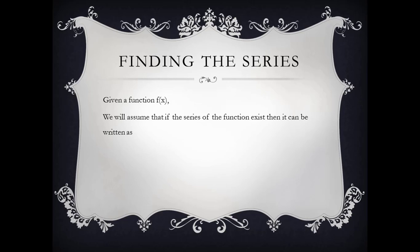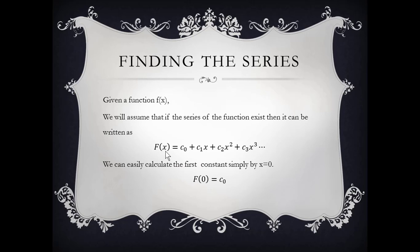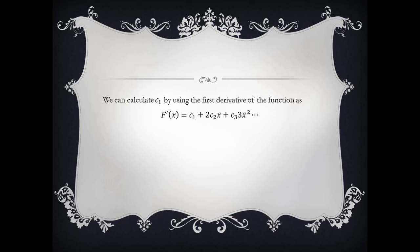For a given function f(x), if the series of this function exists, then this function can be written in the series form as f(x) = C0 + C1*x + C2*x² + C3*x³. Our objective is to find the constants C0, C1, C2, and C3. It is simple to find C0: you can simply substitute x=0 in this relation, so C0 = f(0).